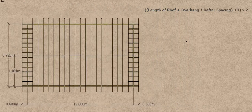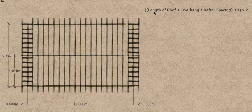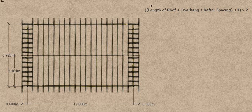The formula to work out the number of rafters: we take the length of the roof, add our overhang on both sides to that length, then divide by the spacing of our rafter — whether it's 450 or 600, which are pretty common. Once we've worked that out, we add 1 to that answer. That gives us one side of the roof, and we then multiply by 2 to work out both sides.